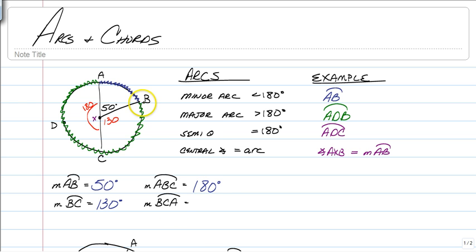BCA, so we're starting at B, passing through C, and finishing all the way at A. So we're going to go 130 degrees for this and another 180 degrees. So that's going to give us 310 degrees. All we had to do was 180 plus 130. And that's it for central angles with arcs.